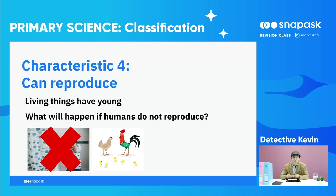Next, living things can reproduce. What does this mean? It means they can have young. Think about it — if you and I did not reproduce, what would happen? The human population would cease to exist and there would no longer be humans in the future.